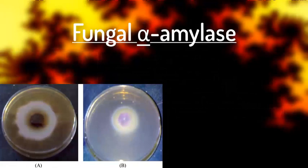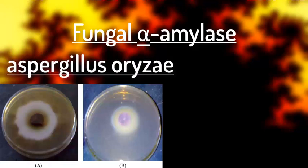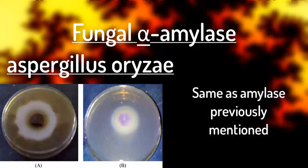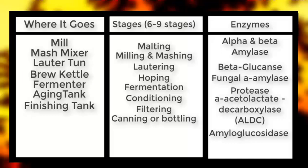The final enzyme we're talking about is fungal alpha amylase — another form of amylase, but produced differently. As the name suggests, it is produced by Aspergillus oryzae, a type of fungi. It can be extracted and added to either the mashing or fermentation stage to help break down starch and speed up fermentation. With this, we have gone through the complete process of beer making and the enzymes that are used to essentially make beer.